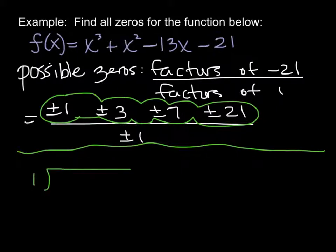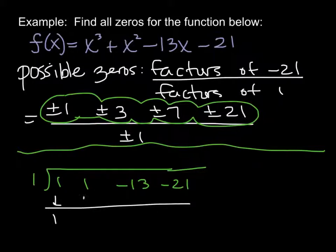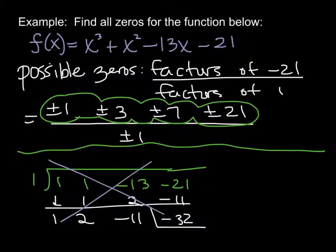These are pretty fast. I'm going to see if 1 divides evenly in there. So I bring down my 1. I multiply, I add, I multiply, I add, I multiply, and I add, and I get negative 32. It doesn't even matter to me what that number is unless it's a 0. So this one doesn't go in. This is not going to work. That means I'm going to cross off 1 from my list.